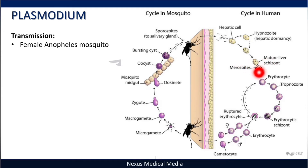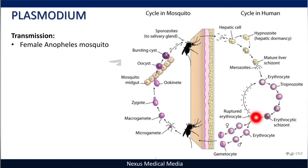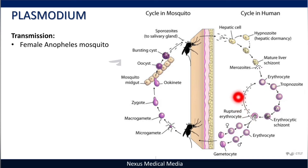When merozoites enter the red blood cell or erythrocyte, this is the erythrocytic phase. Trophozoites mature inside the red blood cell into erythrocytic schizonts containing merozoites. On rupturing at this stage, body temperature rises — fever occurs. These merozoites can then infect other red blood cells, repeatedly bursting and re-infecting, until in severe stages the patient develops anemia.